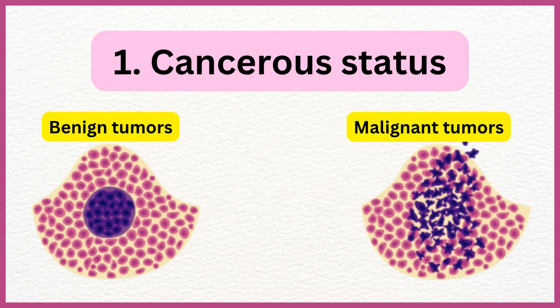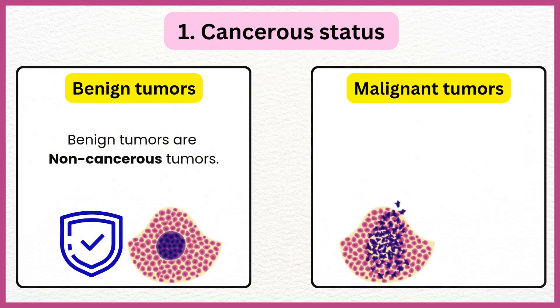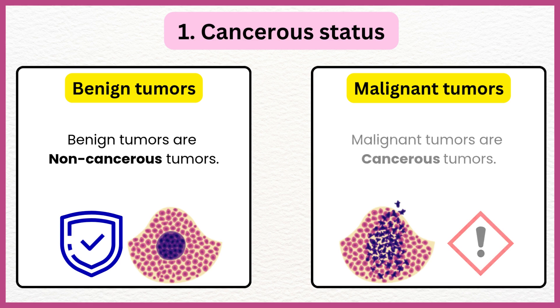Cancerous Status: Benign tumors are non-cancerous tumors. On the other hand, malignant tumors are cancerous tumors.